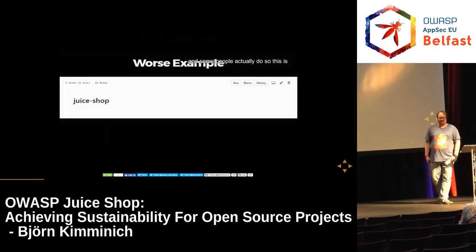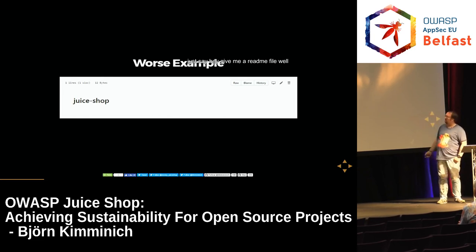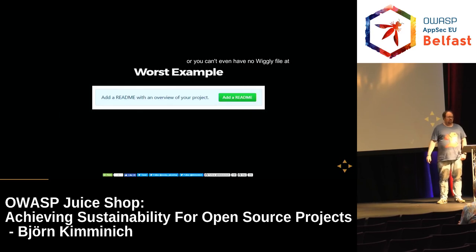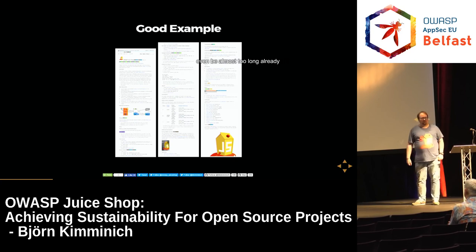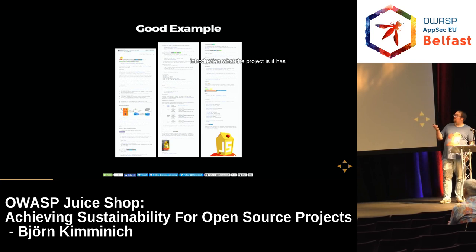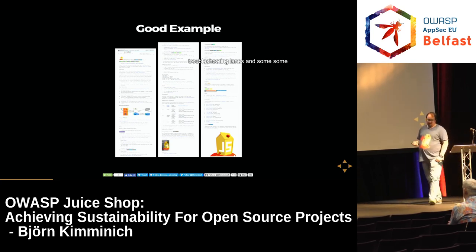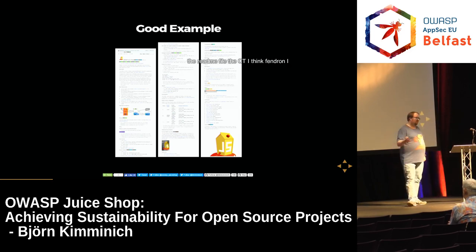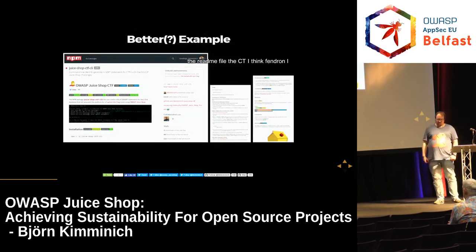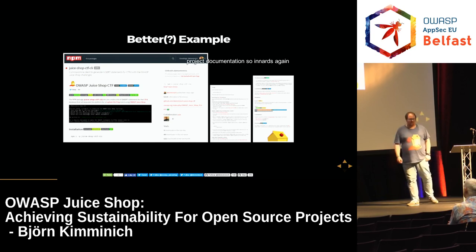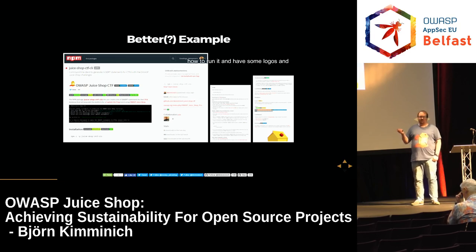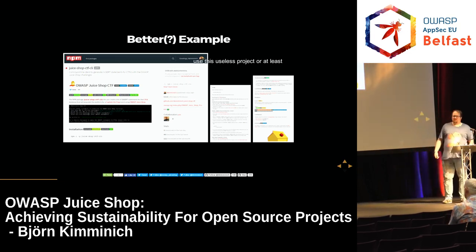You can do even worse — some people just use what GitHub auto-generates, or have no readme file at all. The Juice Shop readme is a little bit longer; it might even be almost too long already. But it has everything: an introduction, complete setup instructions, troubleshooting links, and other content. The CTF extension might even be a slightly better example — shorter than the main project documentation, but it tells you how to install and run it, with logos and badges that invite people to check out the project.